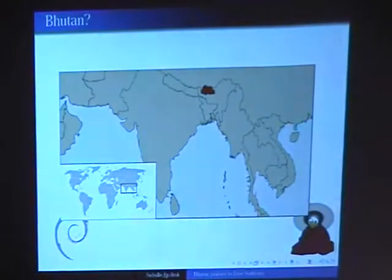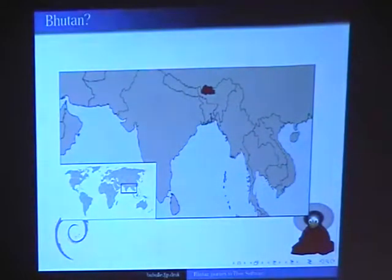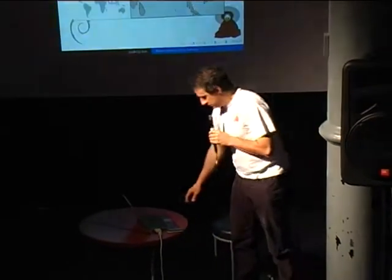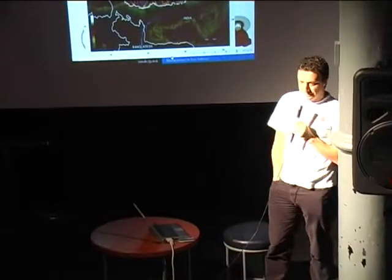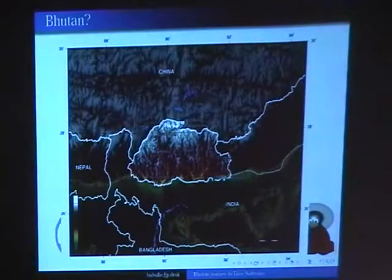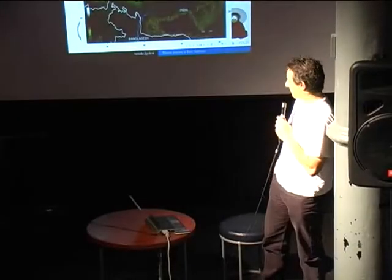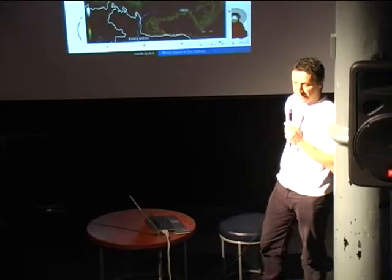So, Bhutan — what's Bhutan? Maybe some of you know about the country, maybe not. Bhutan is a small country just north of India, between India and China, mostly in the Himalaya range. Bhutan is a country of mountains, forests, and valleys. It's a very isolated country depending on India mostly for nearly everything, and economically speaking, the only income for Bhutan is selling electricity to India.